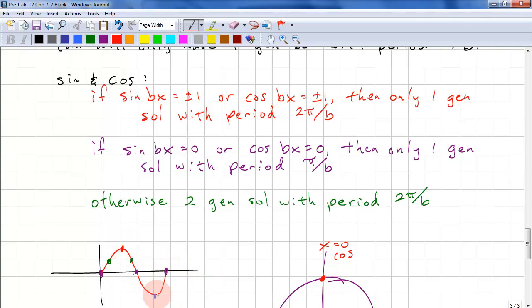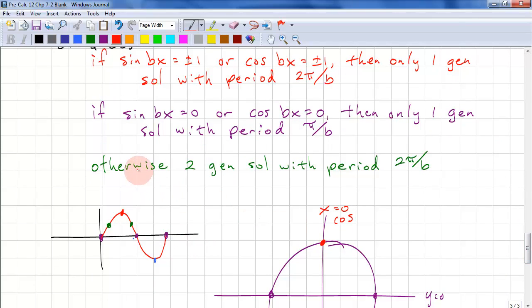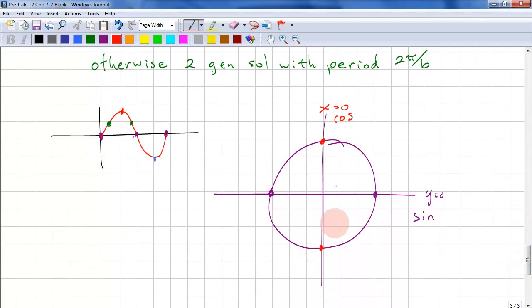Here we have a max, here we have a min. And finally, if sine bx or cos bx doesn't equal either of those, then there's two general solutions with the period being 2 pi over b. And again, we can look at these on the unit circle. For sine, we see it equal to 0 here and here, the maximum and minimum. And for cosine, we see 0s here and here, and we see the maximum and the minimum. Remember, cosine is related to x, sine is related to y.